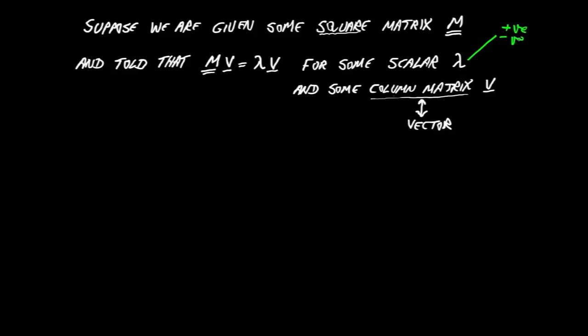Okay, so this scalar lambda could be positive, negative, or zero. Meanwhile, this vector V could be anything except the trivial boring case of just zeros. It's something other than that.